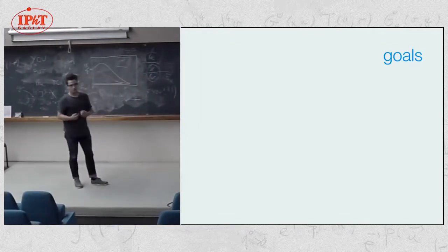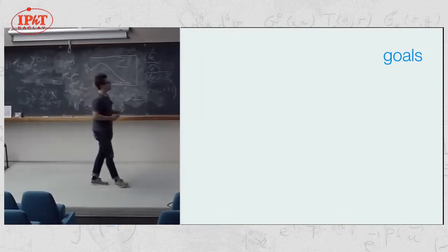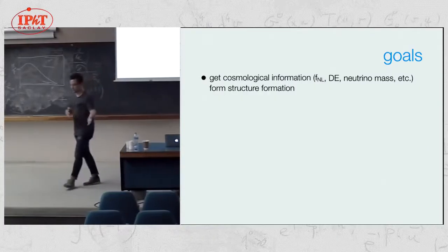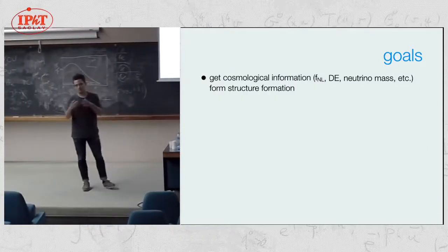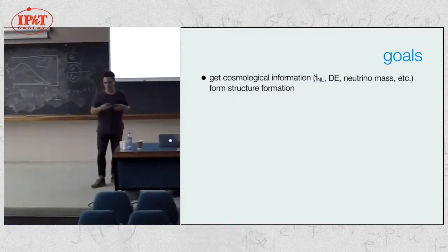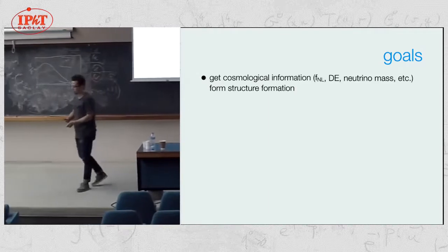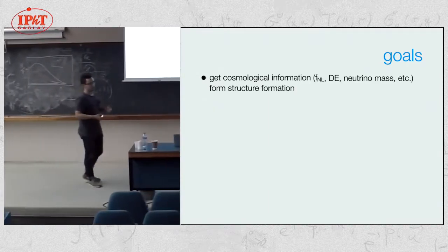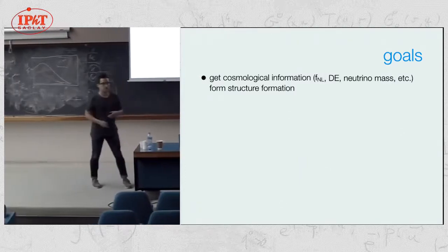The goals and why we're trying to do this program: first, we want to get some kind of cosmological information, like either about primordial non-Gaussianities, which will be an early universe thing, or late universe stuff like dark energy, massive neutrinos, something about the universe we want to extract from the statistics of clustering on large scales, from large scale structure.